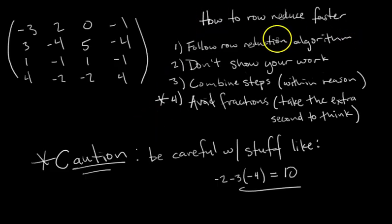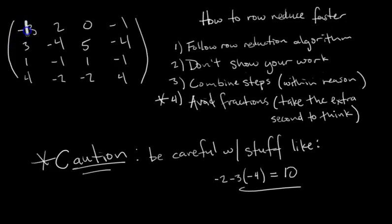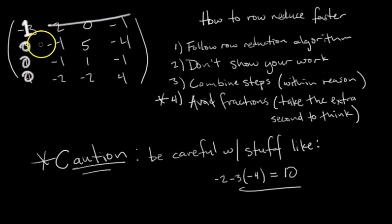Let's go through the row reduction algorithm. Looking at this matrix in the top left, the first step is: to have a matrix in reduced row echelon form, we need all our pivots equal to 1. Our first pivot is in the top left, so we take that top left entry and make it equal to 1. Then we use row replacement to get all entries below the pivot equal to 0. After that, we ignore the first row and first column and look at the smaller submatrix below.